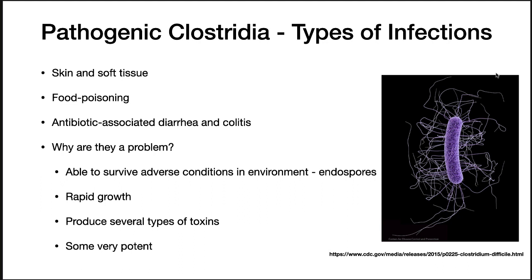Why is this species such a problem? First, they are able to survive adverse conditions in the environment because they form endospores. Second, because of their rapid growth — Clostridium perfringens has a generation time of 6.5 minutes in rich medium, making it possible for this microbe to grow rapidly in improperly prepared food. Many of the species produce toxins, and some of them are very potent.